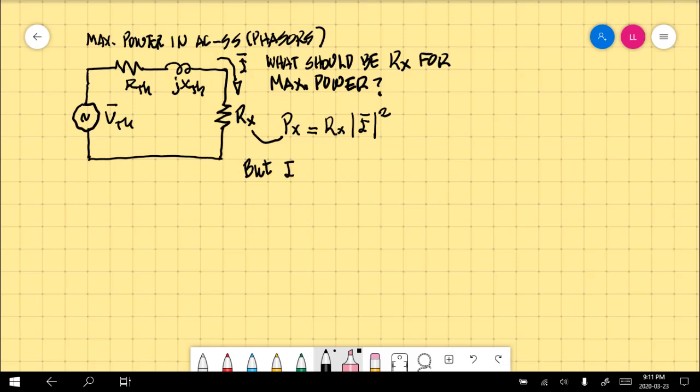The RMS value of that current would be the absolute value of the RMS value of the Thevenin voltage divided by the absolute value of the impedance in that loop, which is the square root of the total resistance squared plus the total reactance squared. And that is the square of the RMS value of the current flowing through the external resistor.